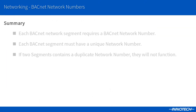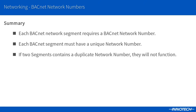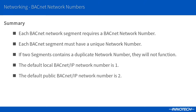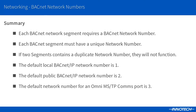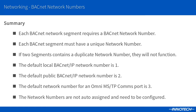In summary, each network segment must have a unique network number assigned. The local network number is 1 and the public network number is 2 by default. When an Omni comms port is configured as MSTP, it will default to network number 3. All network numbers are not auto-assigned other than the defaults and will need to be checked and adjusted when creating the networks to prevent duplicates.